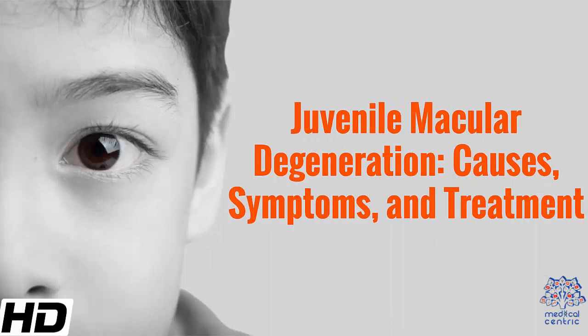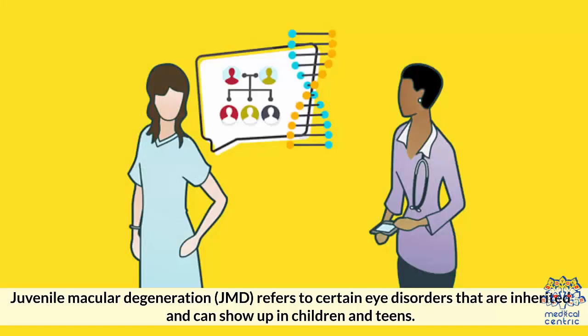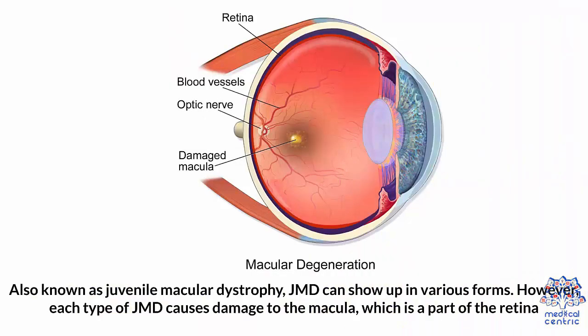Today's topic is Juvenile Macular Degeneration: Causes, Symptoms, and Treatment. Juvenile Macular Degeneration, JMD, refers to certain eye disorders that are inherited and can show up in children and teens. Also known as juvenile macular dystrophy, JMD can show up in various forms.